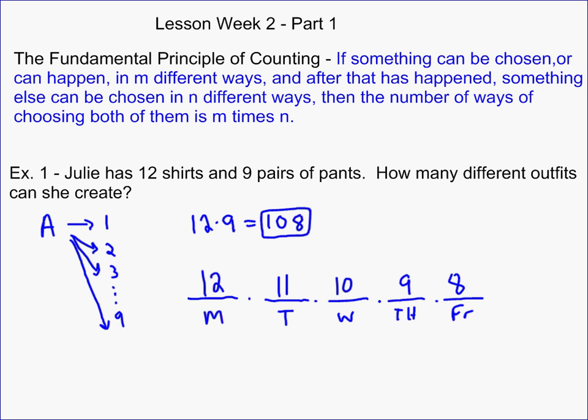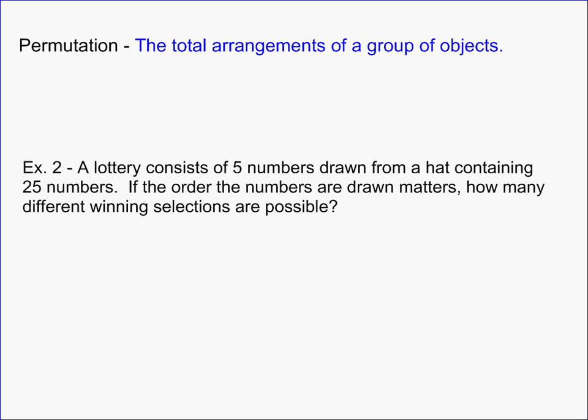And that actually has a specific name, and that name is called a permutation. When we talk about a permutation, we're talking about the total number of arrangements. When you see the word arrangements, hopefully that is making you think of order, right? Just like on that shirt example, the order we're talking about were the days of the week. That ordered, as we picked out a shirt, it had a specific order. We didn't just pick out five random shirts. We picked out a shirt for Monday, Tuesday, Wednesday, Thursday, Friday.